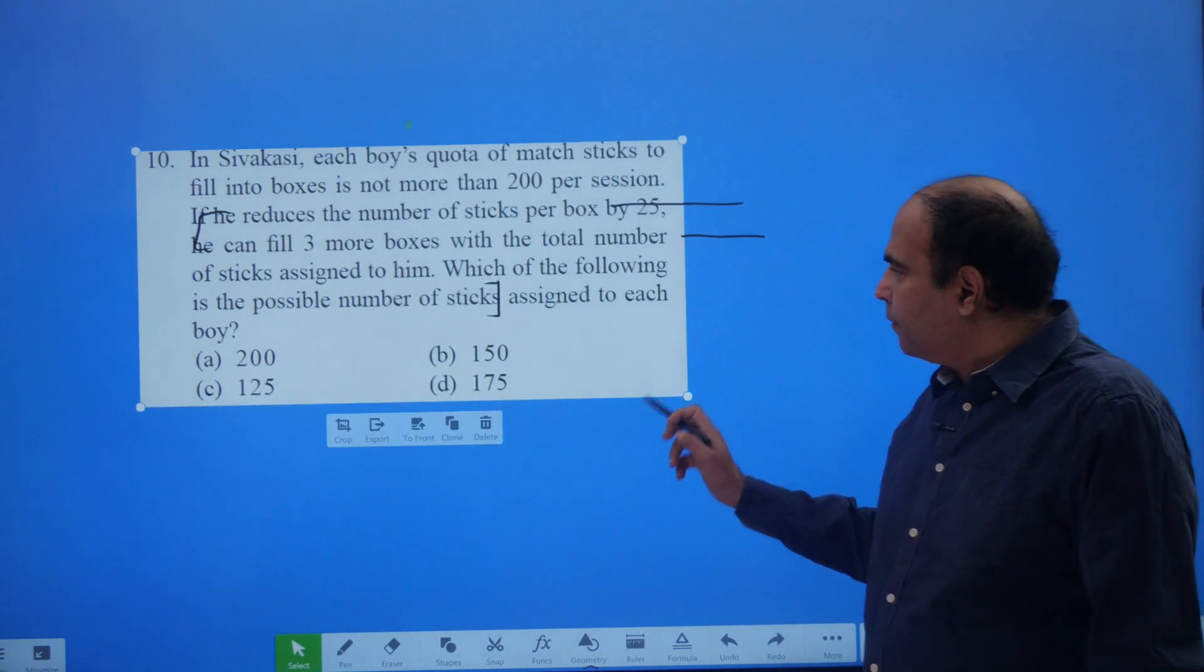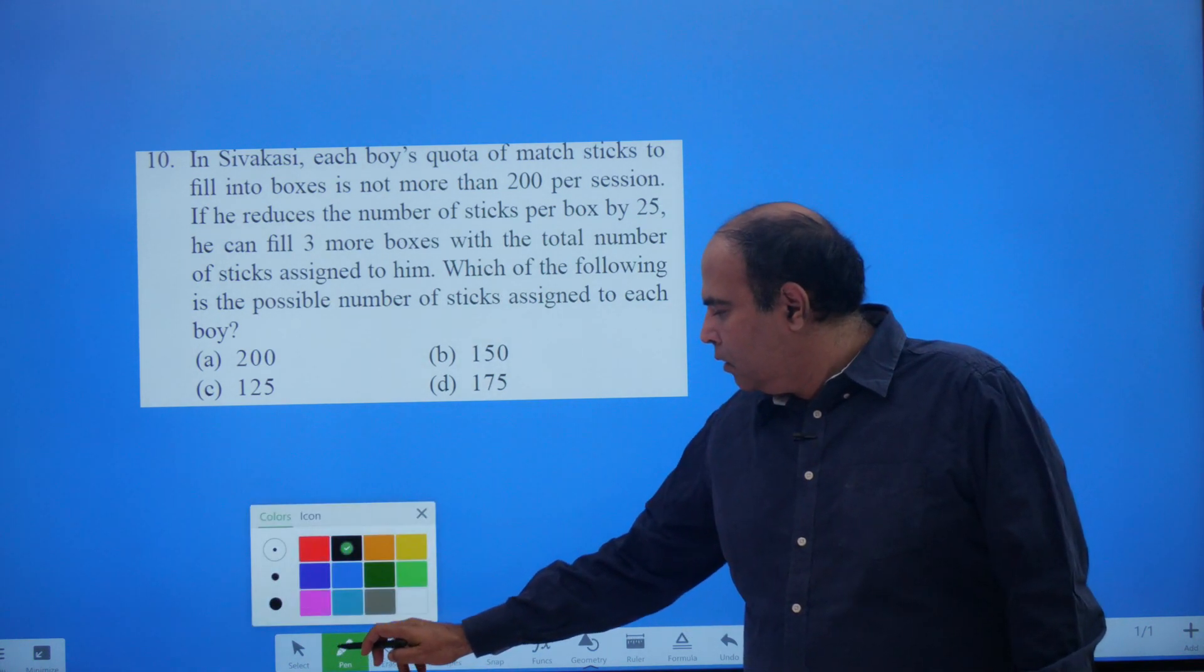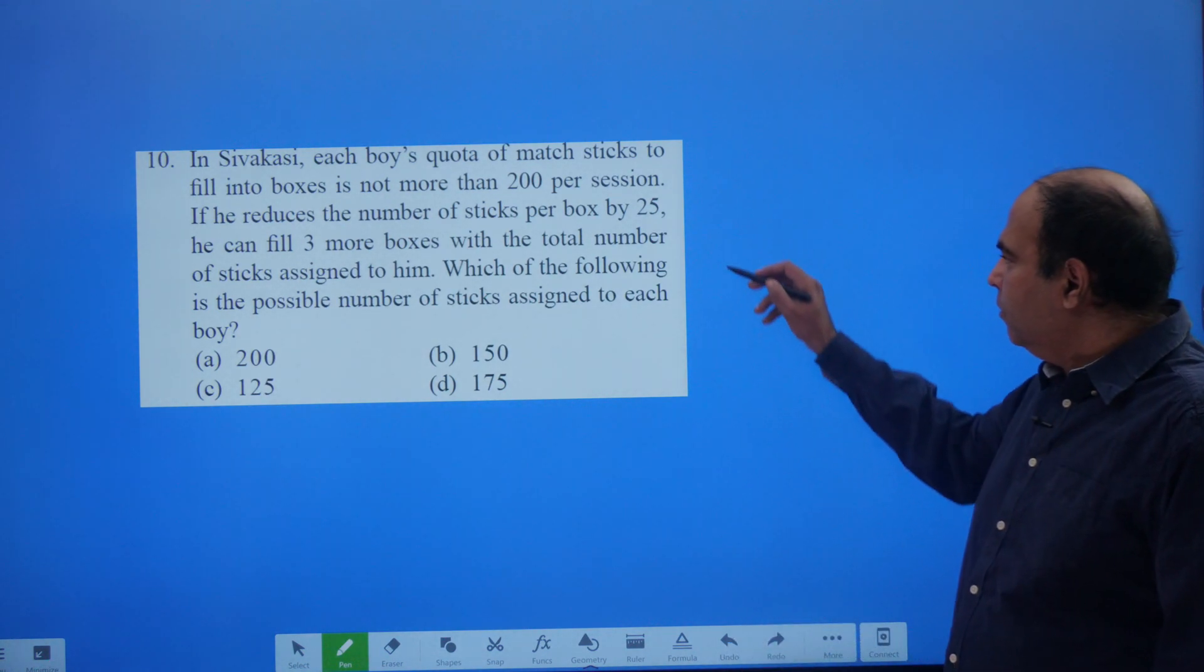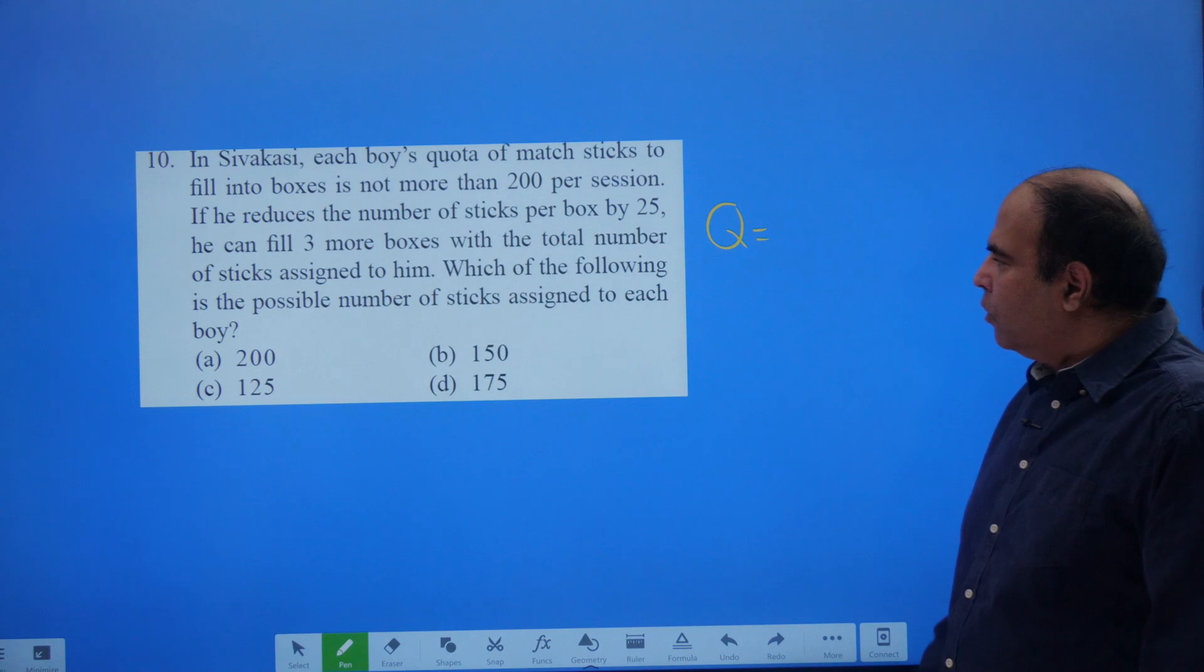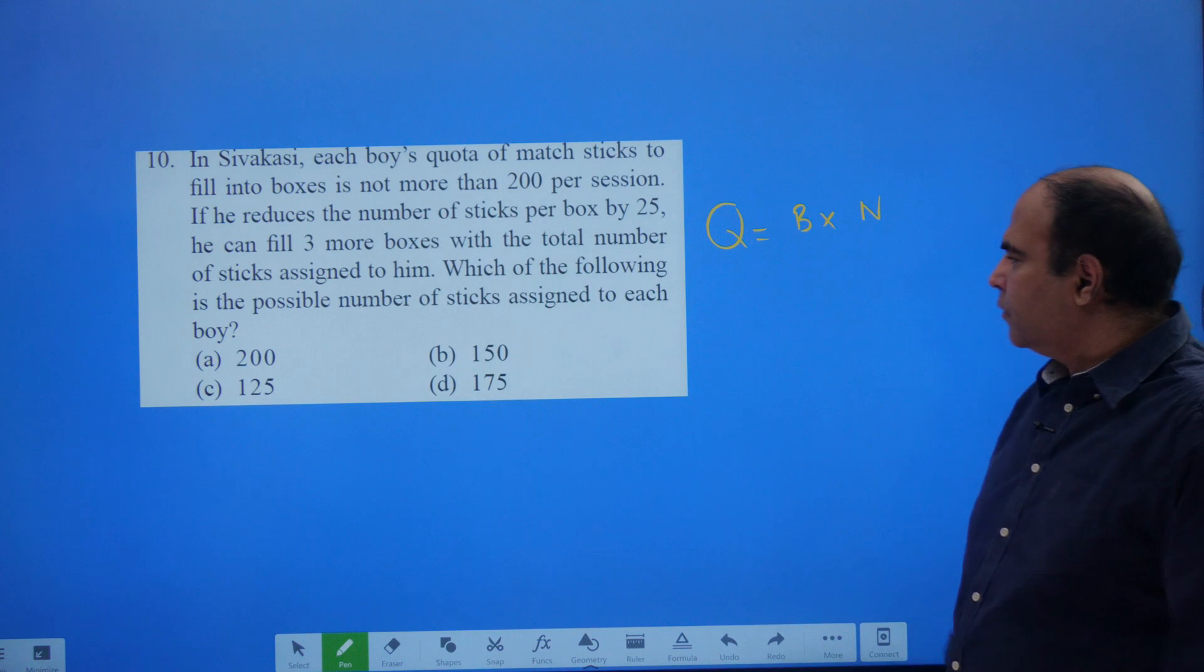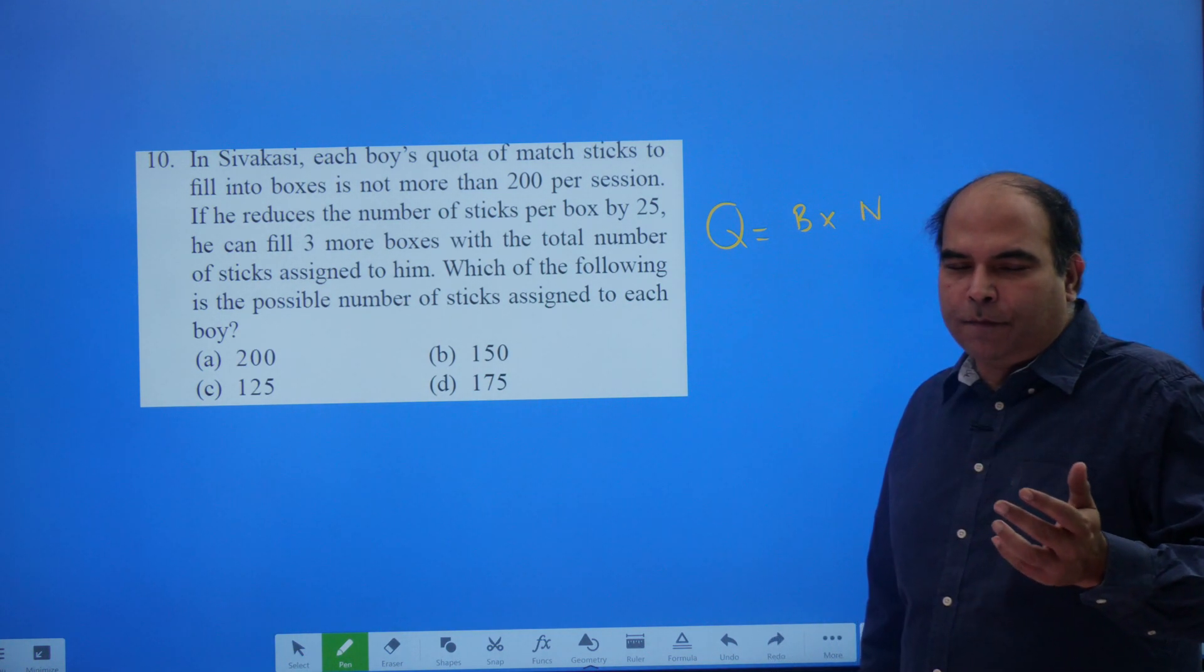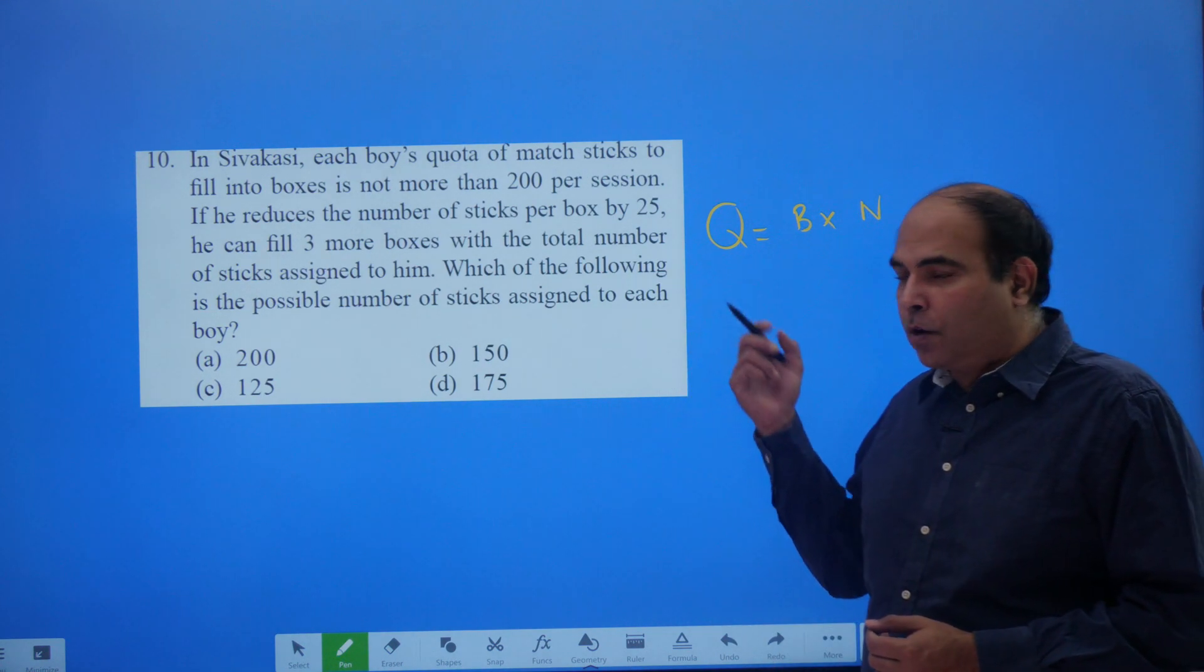So here the total quota Q in this question will be equal to number of boxes B into number of sticks per box N. Right? So if he fills 5 boxes with 35 boxes with 30 sticks each, he'll be having a quota of 150 and so on.